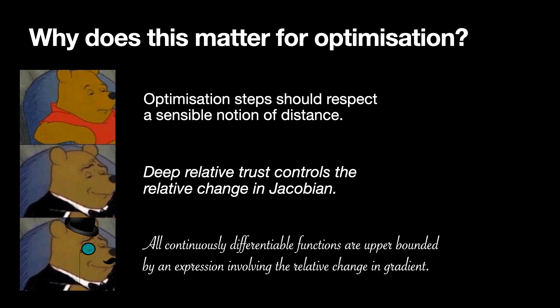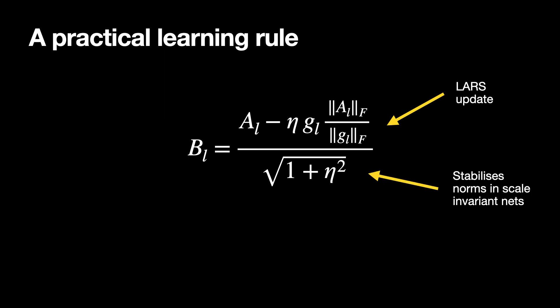Ultimately, we'd like to get a practical learning rule out of all of this. We propose the following learning rule, which is the Lars update with a normalization that stabilizes the norms in scale invariant networks. Importantly, because the update is layer-wise relative, it respects deep relative trust. We call it fromage.